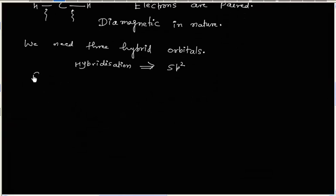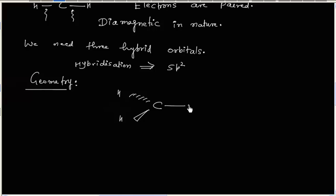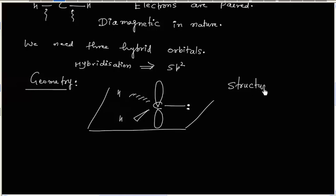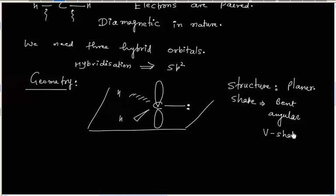Now we can show the geometry. We will have two hydrogens, one lone pair of electrons, and the p orbital is empty. So the structure will be planar. The shape is bent, angular, or v-shaped. When we consider shape or geometry, we only consider the bond pairs of electrons, so the bond pairs form an angular or v-shaped geometry.